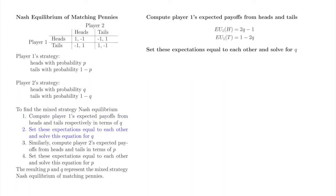When we complete a step, we'll move the results of the step to the top of the right-hand column and continue below. Player 1 is indifferent between heads and tails when her expected payoff from heads is equal to her expected payoff from tails. Setting 2q minus 1 equal to 1 minus 2q, we obtain Q is equal to 1 half.